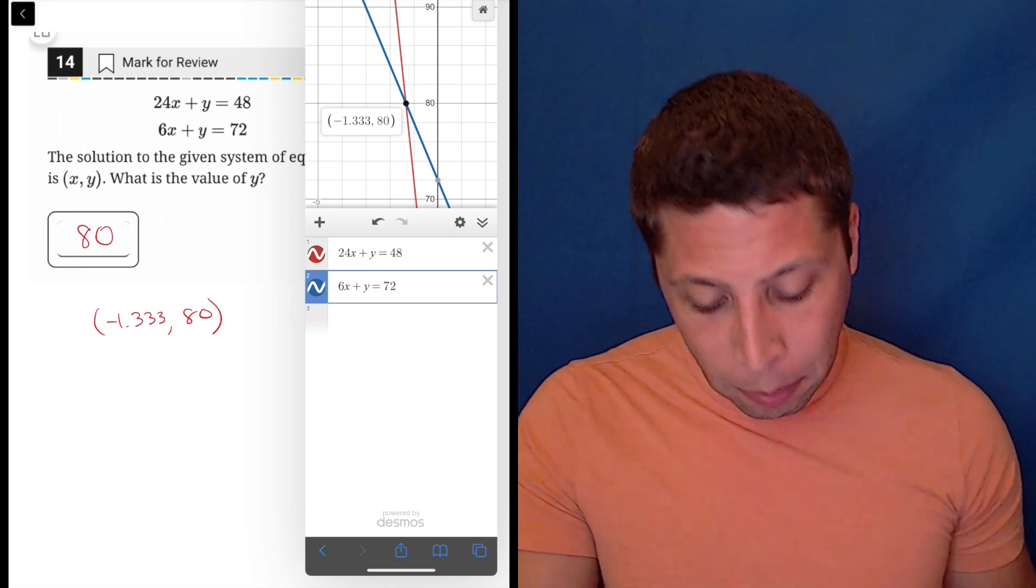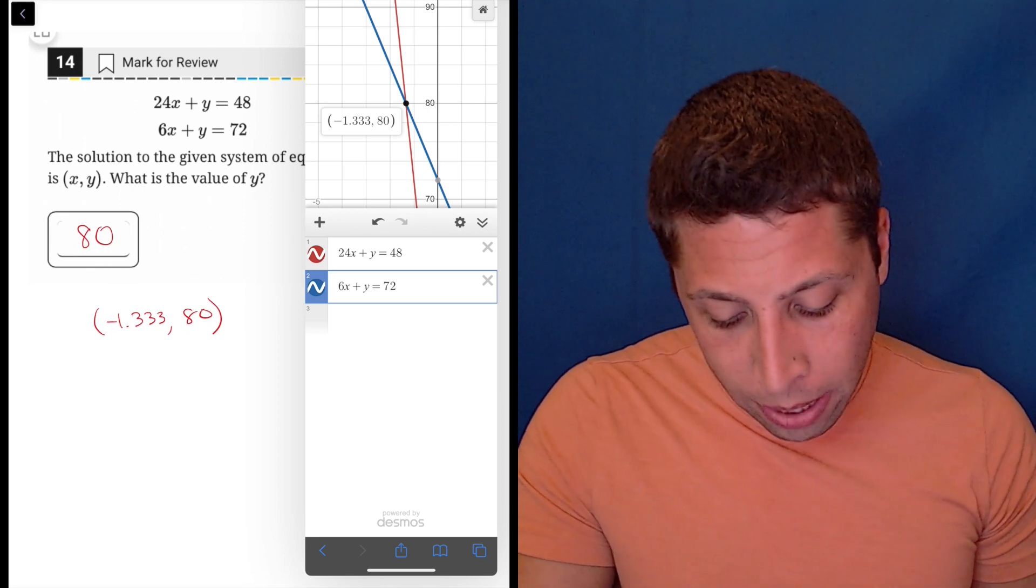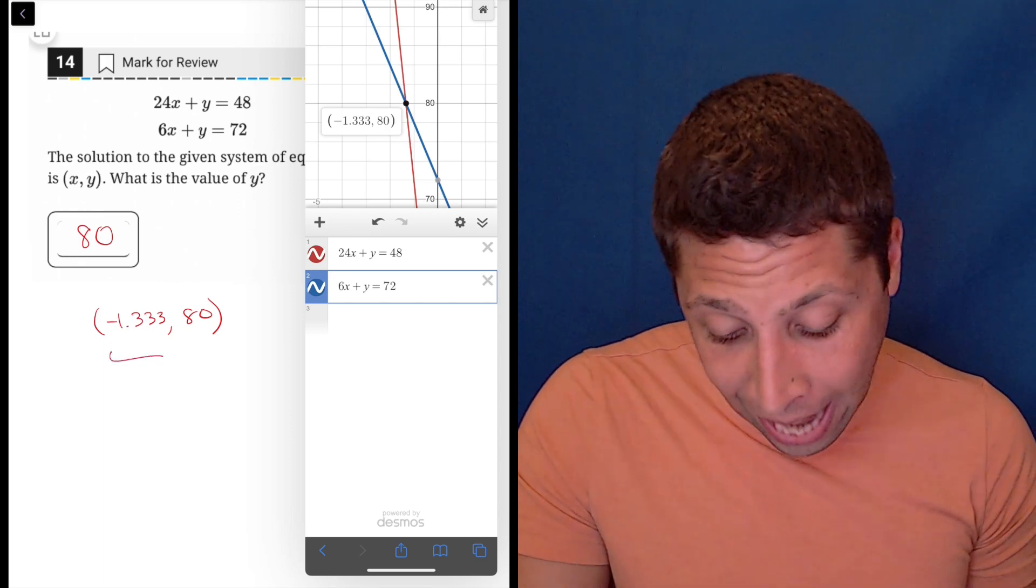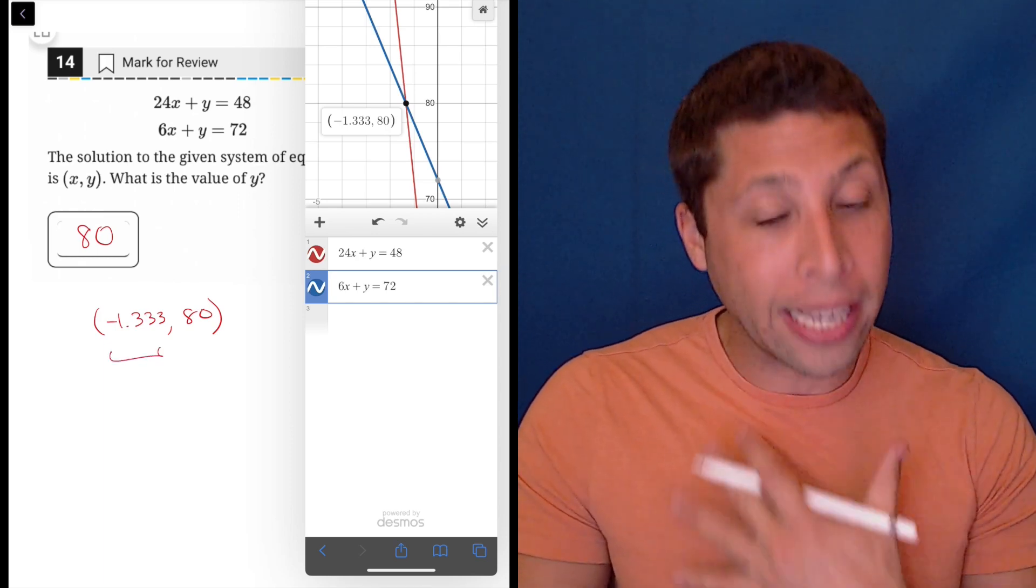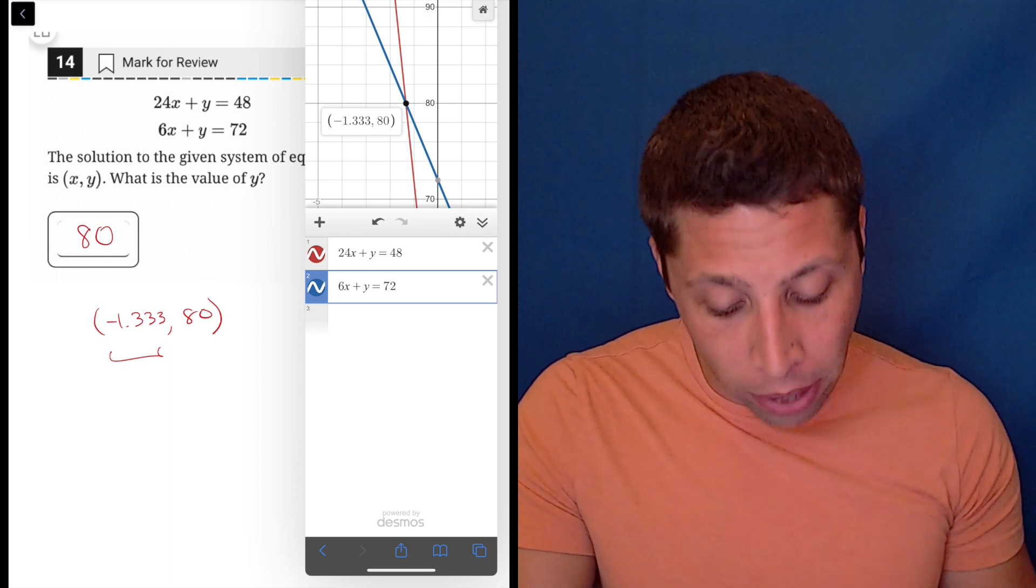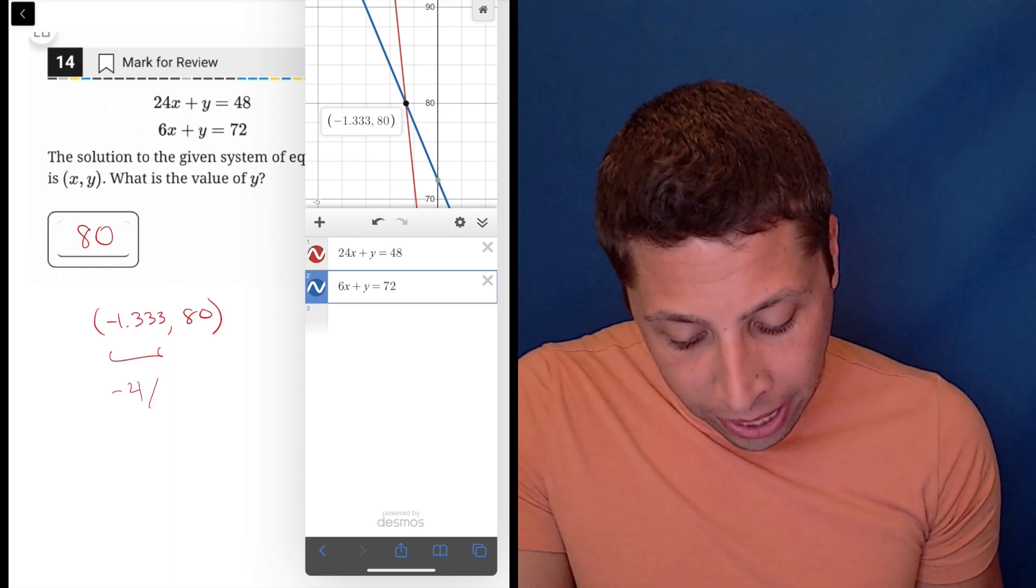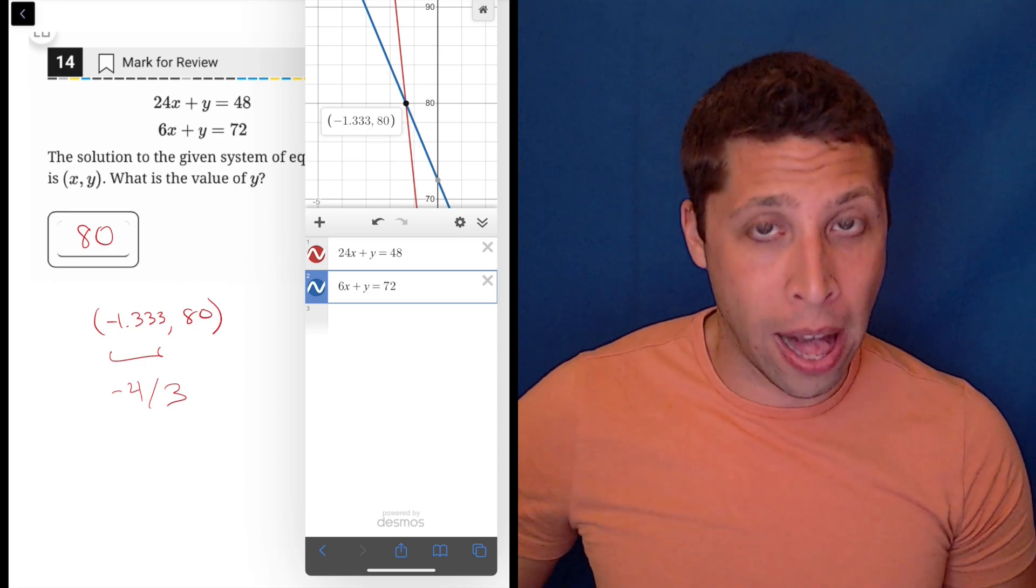But if we were asked for the X, it gets a little bit more complicated. We can bubble one point, we can bubble it exactly like this. We can enter this as the student-produced response. But I get very nervous with this. So if I were asked for the X, I would have bubbled it as negative 4 thirds, because that is the fractional value.